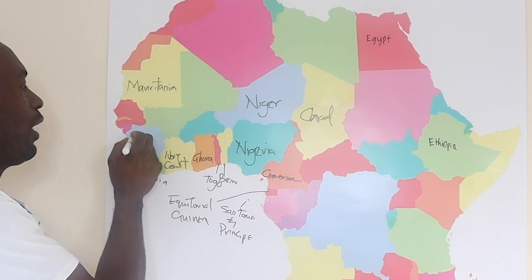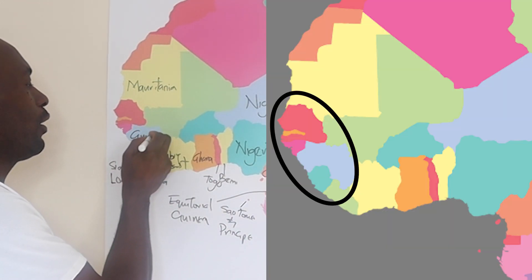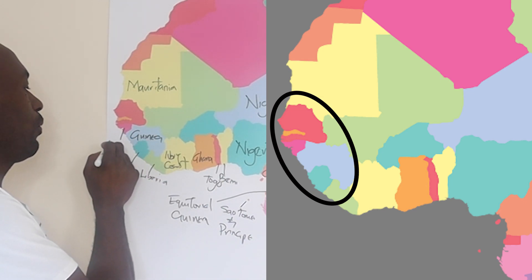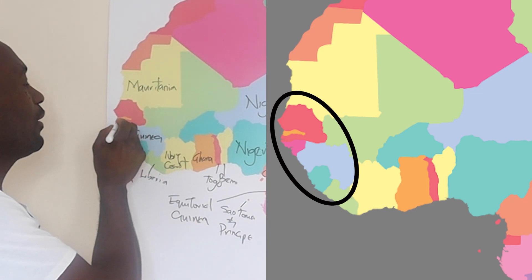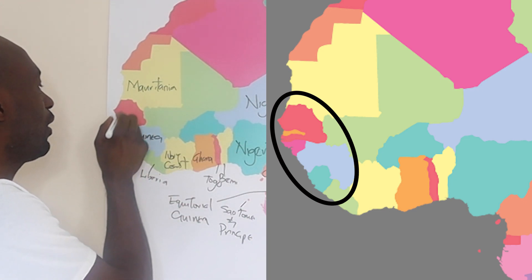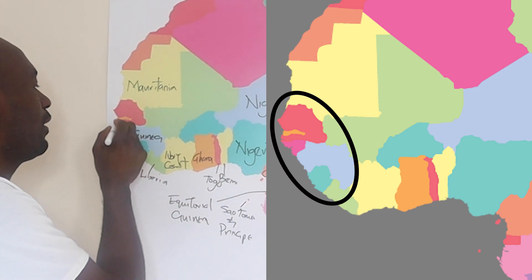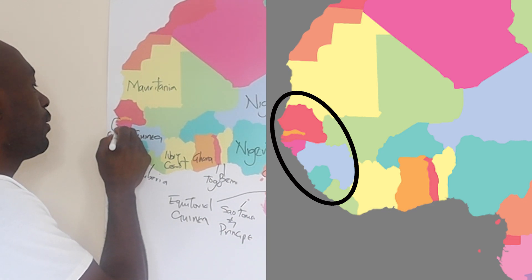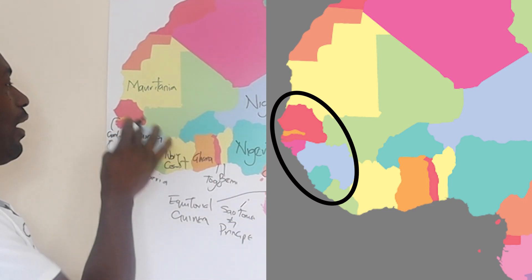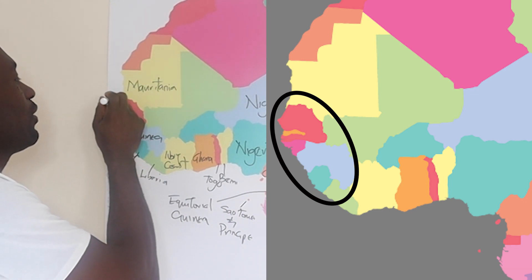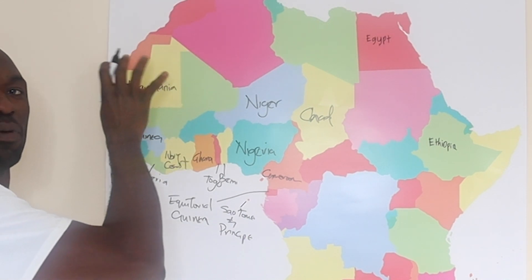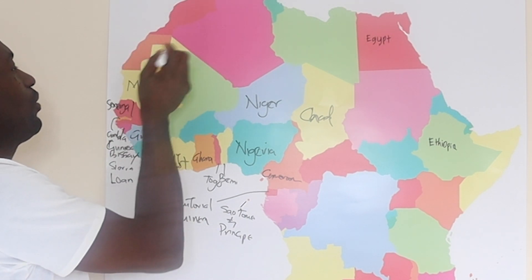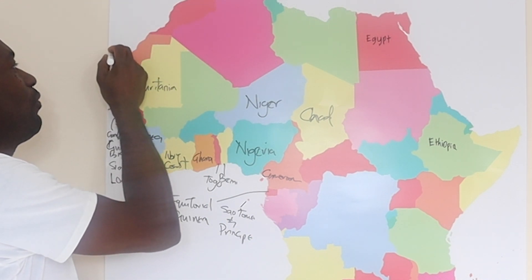So we have Guinea and then we have Guinea-Bissau. And up here is the smallest country in Africa that is not an island, and that is Gambia. And then I have Senegal here. And there's another small island here which is Cape Verde.